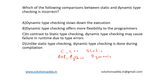Dynamic type checking offers more flexibility to the programmers at the expense of runtime type checking overhead and possible runtime type errors. Going by the options, let's see: option A — dynamic checking slows down the execution.